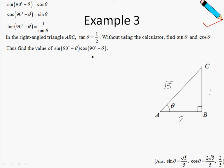Okay, without using the calculator, find sine theta. So sine theta is just opposite over hypotenuse. So opposite is 1, hypotenuse is root of 5.